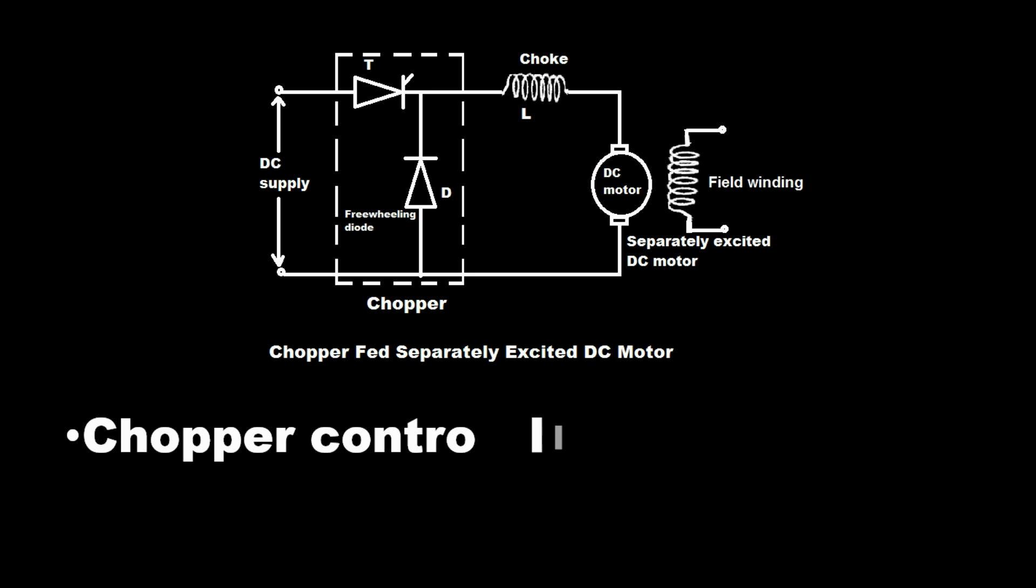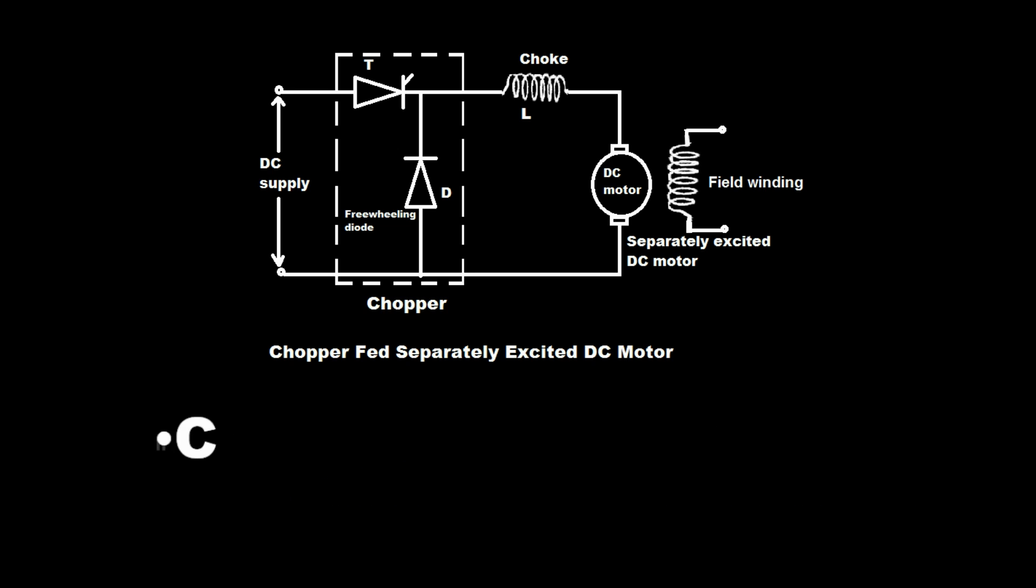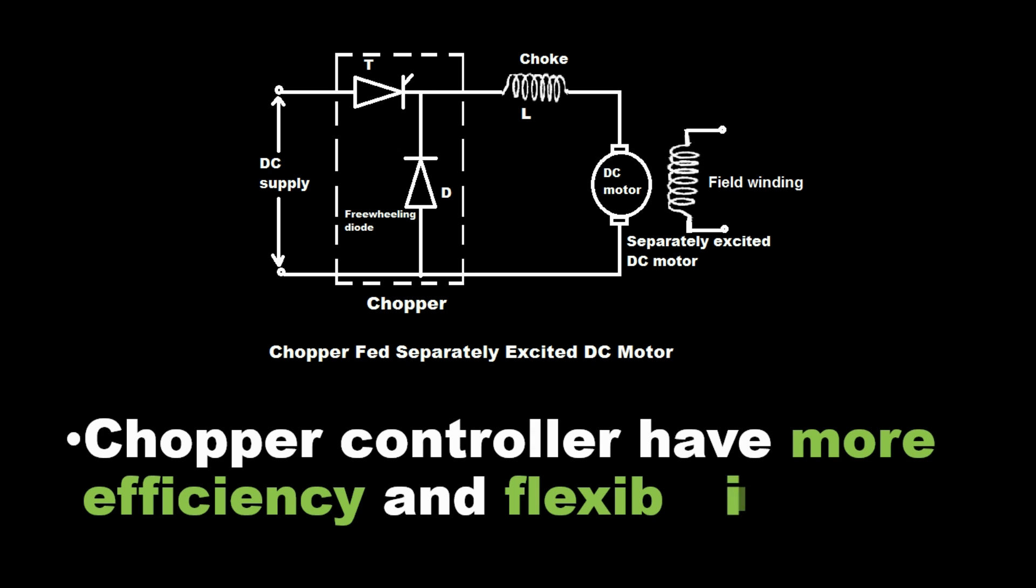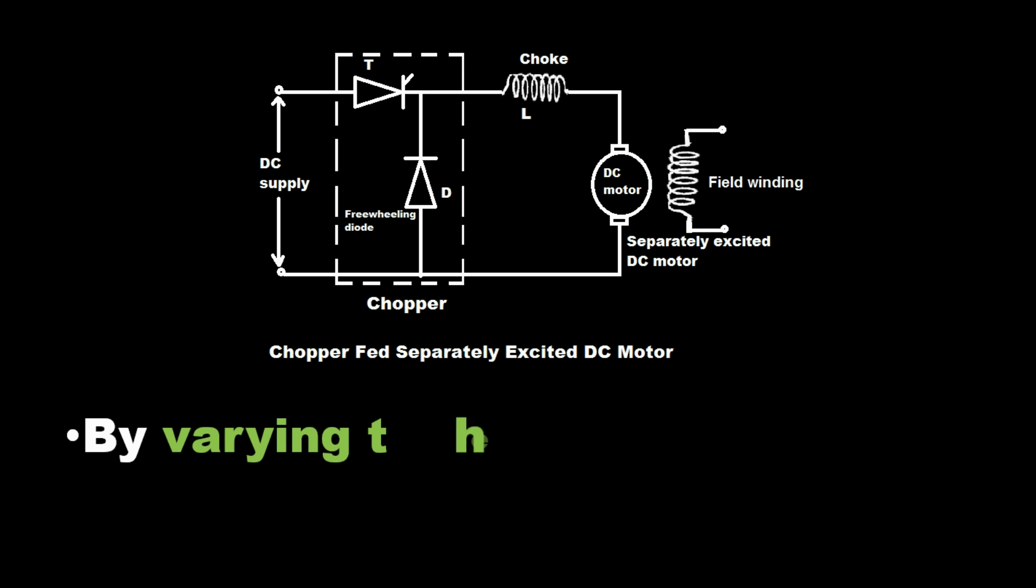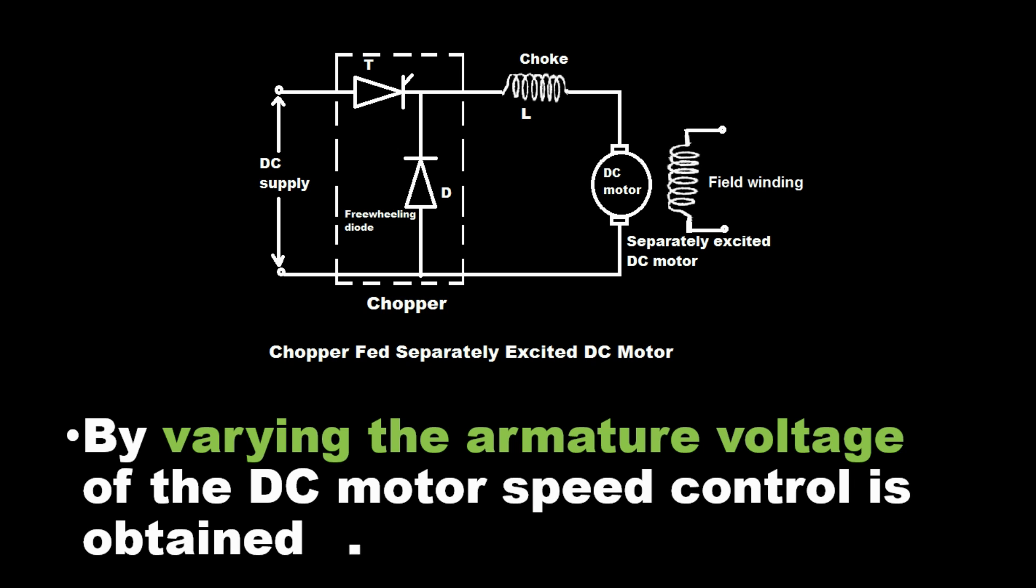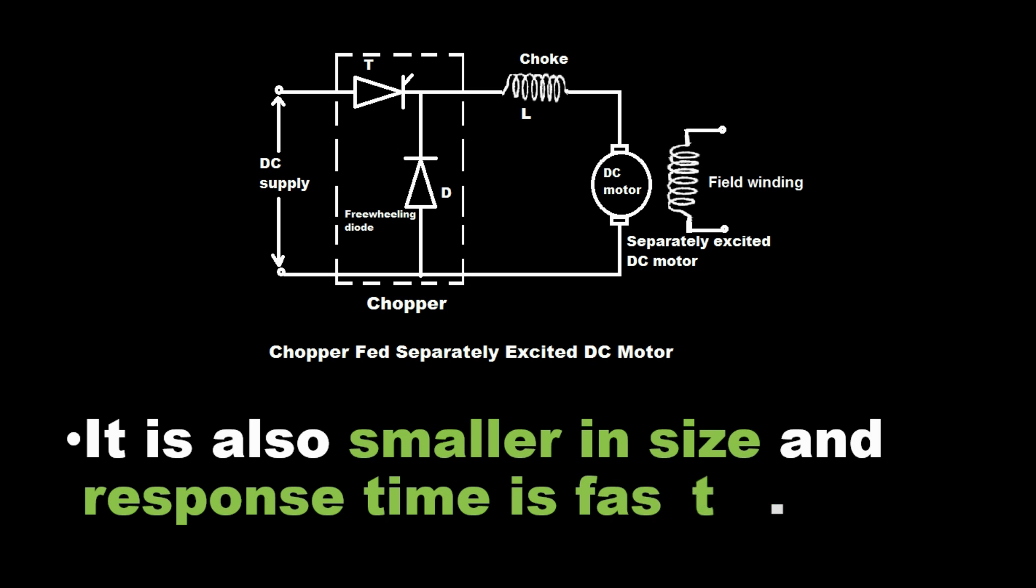Chopper control DC motors are used in traction or industrial drive. Chopper controller have more efficiency and flexibility. By varying the armature voltage of the DC motor, speed control is obtained. It is also smaller in size and response time is fast.